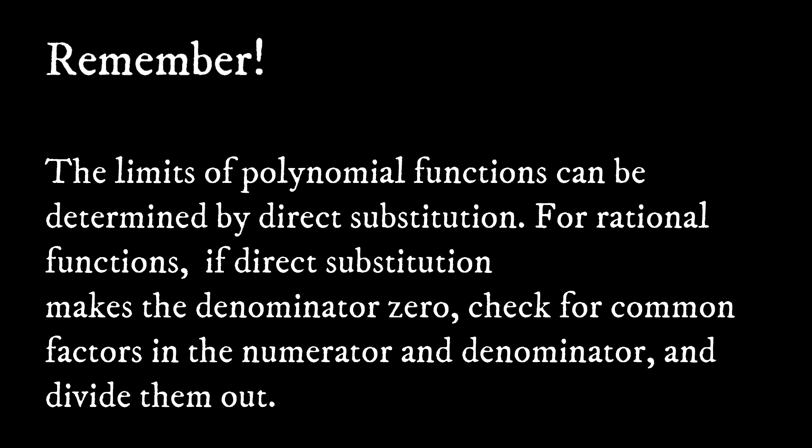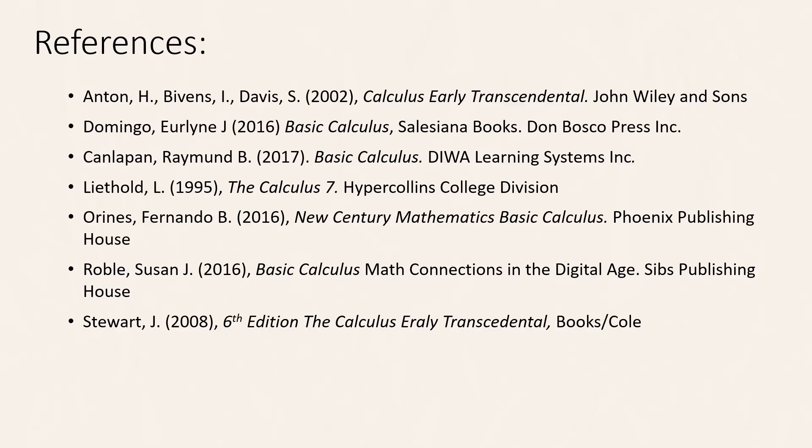Remember that limits of polynomial functions such as quadratic and linear functions can be determined by direct substitution. For rational functions, if direct substitution makes the denominator 0, check for common factors in the numerator and denominator and divide them out. Once done, you may proceed to direct substitution. That's all for today, learners — I hope you have learned something, and see you in our next videos.